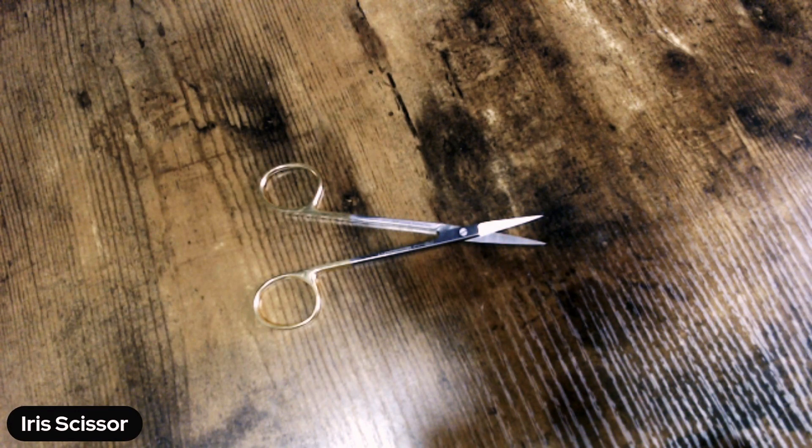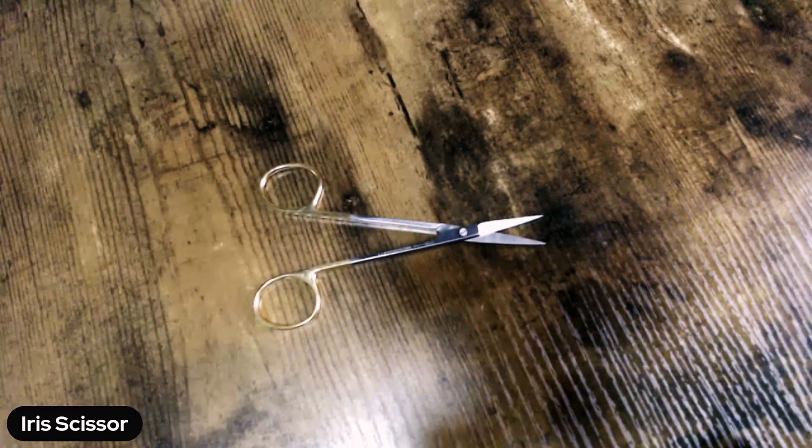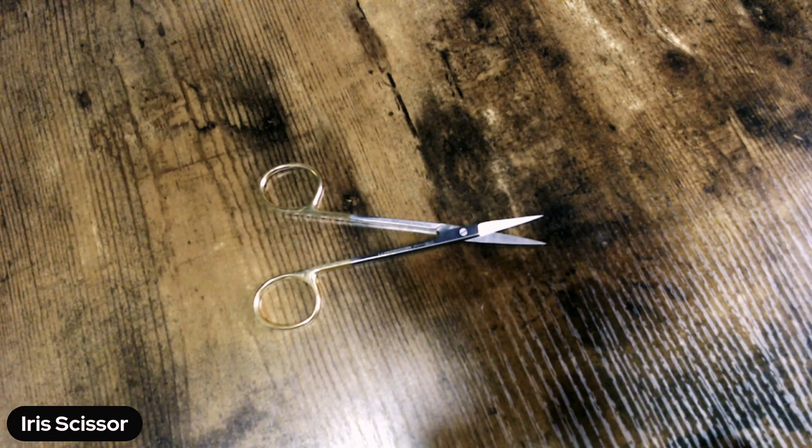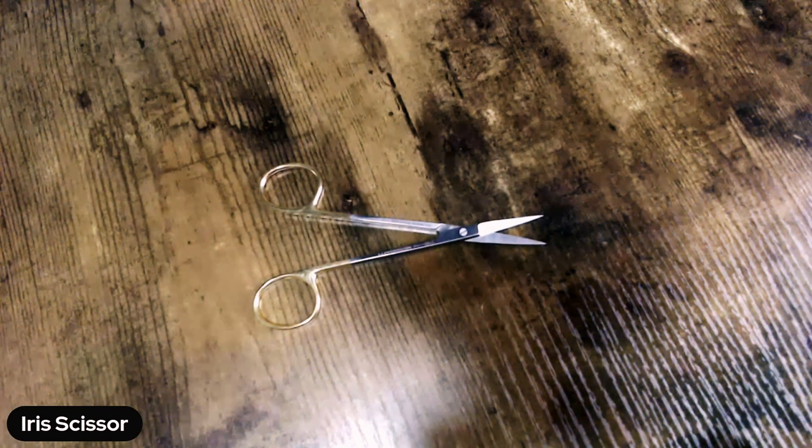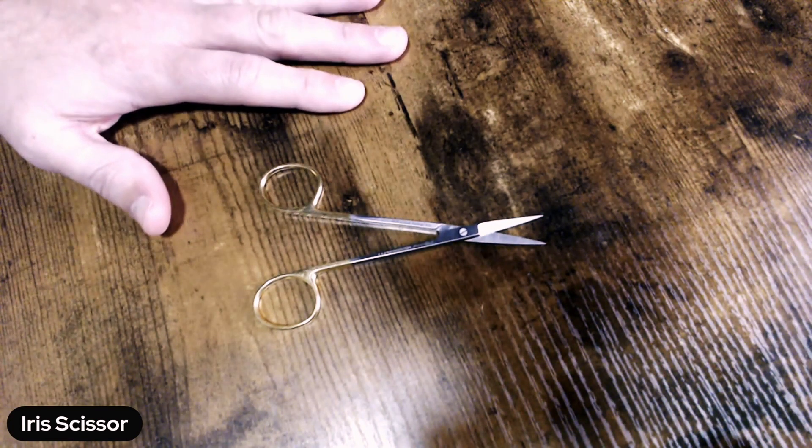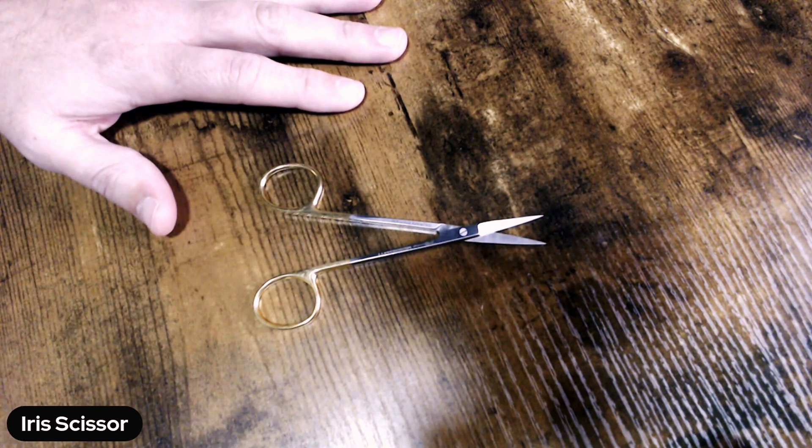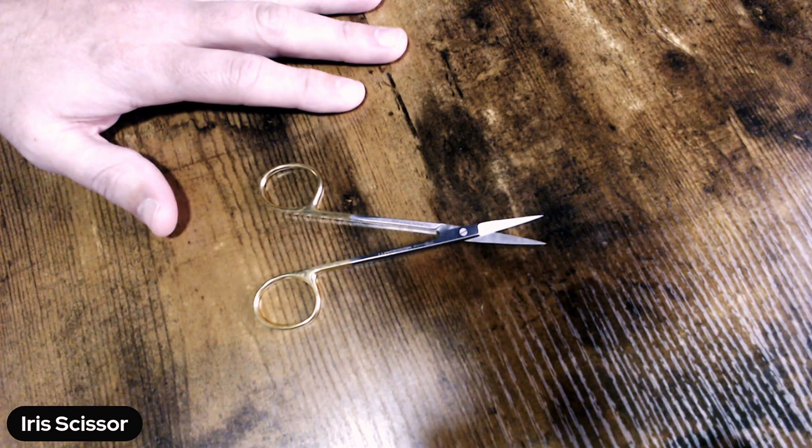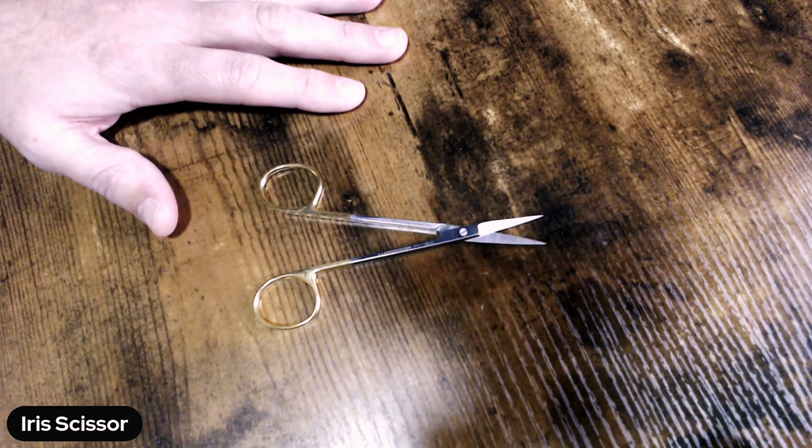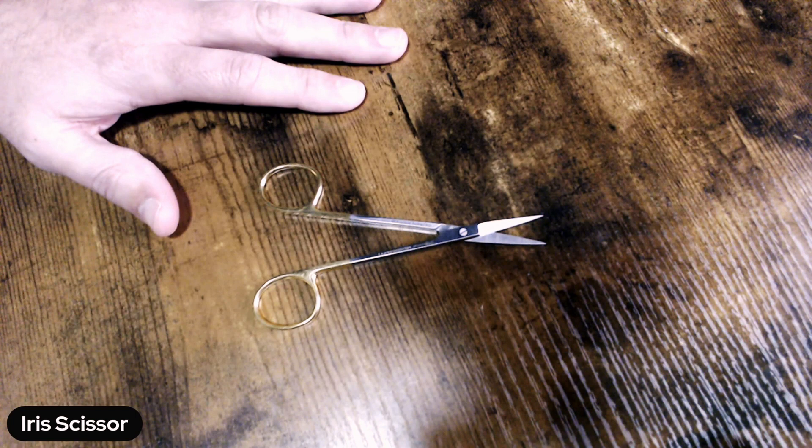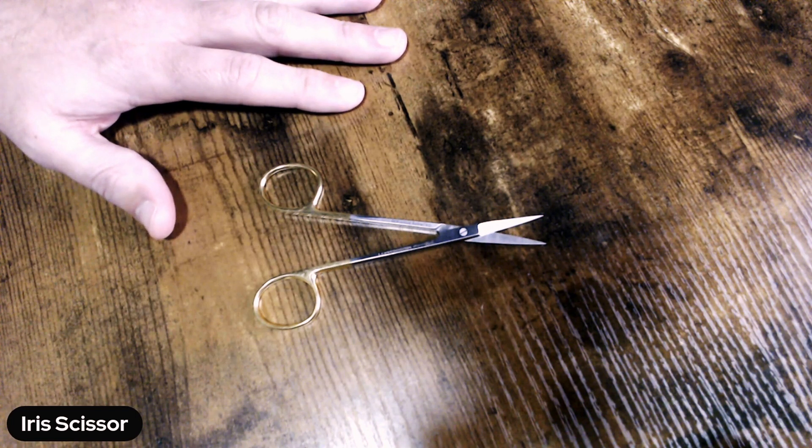Hello, my name is Iris Scissor and today you're going to get to know a little bit more about me. This particular iris scissor that we have in front of us today is a 4.5 inch tungsten carbide sharp-sharp iris scissor. Now I'm going to talk about a couple of those identifying marks on this particular device.